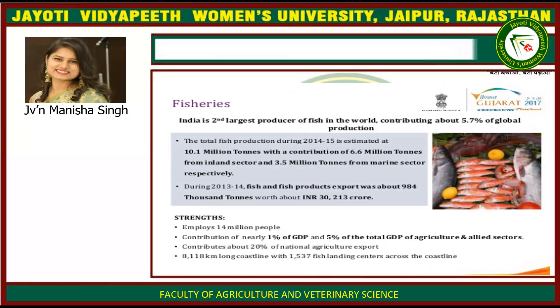India is the second largest producer of fish in the world, contributing about 5.7% of global production. Total fish production during 2014–15 is estimated at 10.1 million tons — 6.6 million tons from the inland sector and 3.5 million tons from the marine sector. Fish and fish products export during 2013–14 was about 984,000 tons worth 30,213 crores rupees. The fisheries sector employs 14 million people, contributes nearly 1% of GDP, and accounts for about 20% of national agricultural exports. India has an 8,118 km coastline with 1,537 fish landing centers.